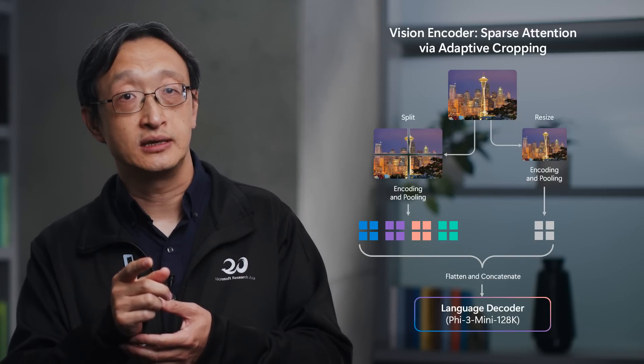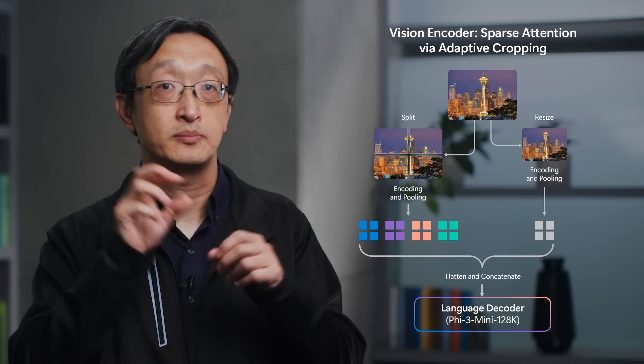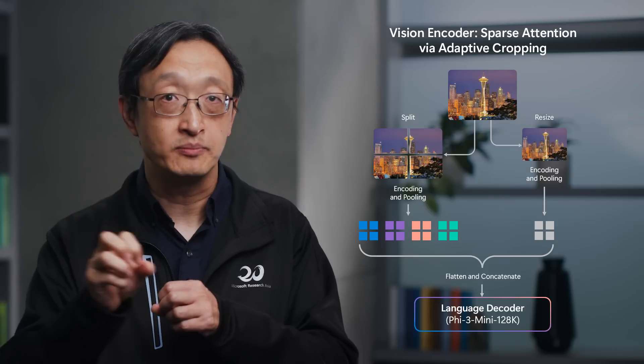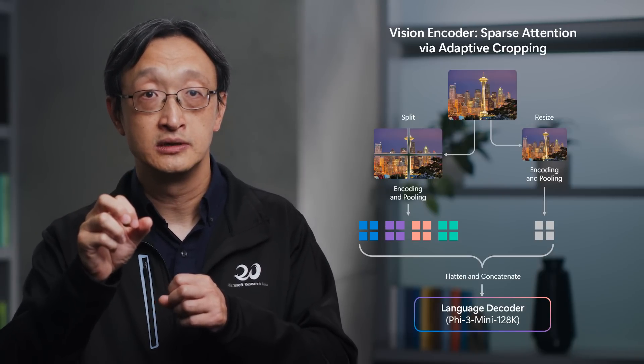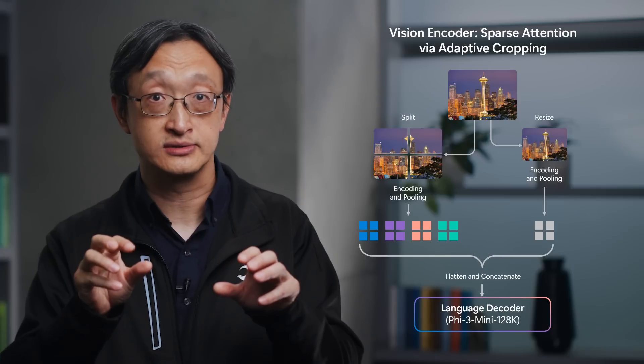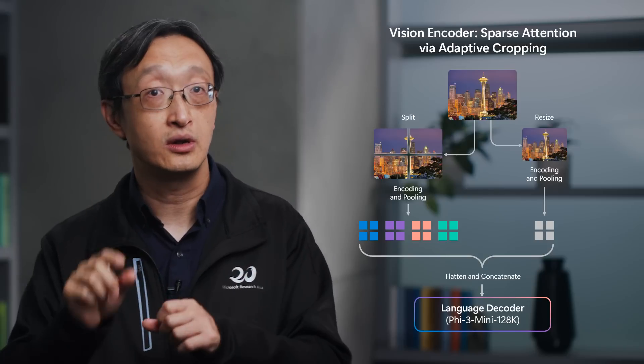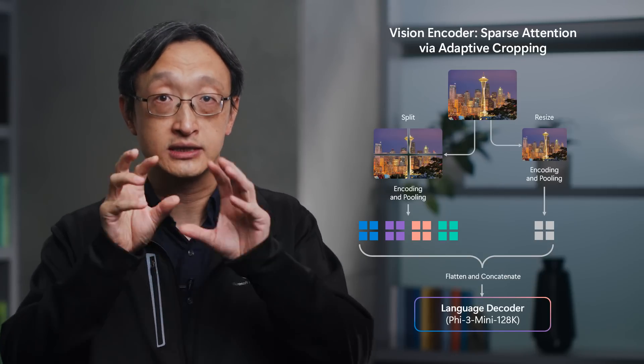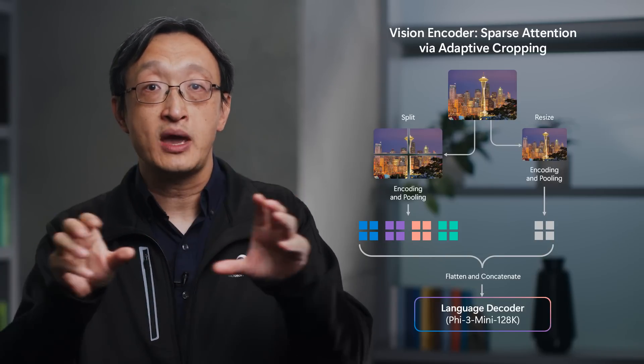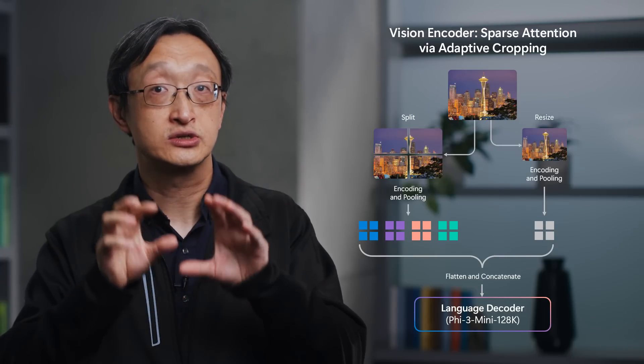The vision encoder extracts vision tokens from an input image and needs to encode extremely long context due to the large number of vision tokens extracted from high-resolution images. Our transformer-based vision encoder uses a sparse attention mechanism based on dynamic cropping. In this example, we split an input image into 2D attention blocks and build for each block a local attention map by computing attention scores only within the block. To encode dependencies among tokens in different blocks, we resize the high-resolution input image into a low-resolution image so that all visual tokens can fit in one attention block, and build a global attention map for the whole input image using its coarse-grained version.